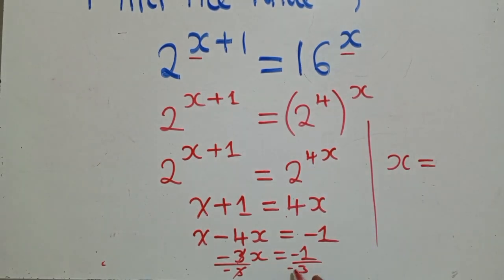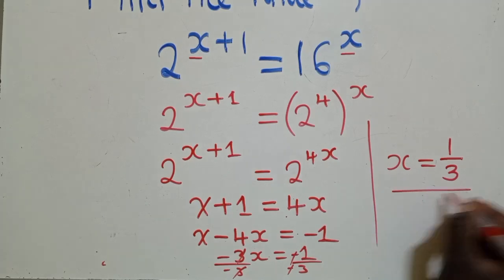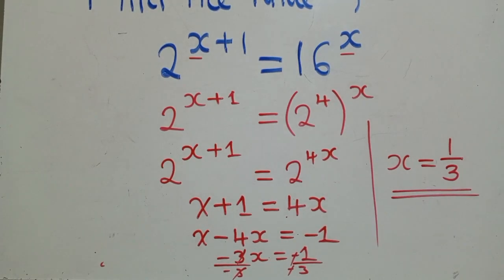which is equal to this side. It will only be the signs that will be cancelled. And we'll remain with 1 over 3 as our solution. So this is how you get to find this exponential equation.